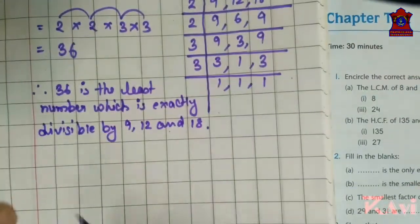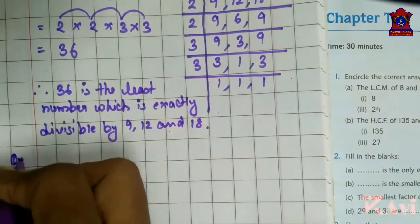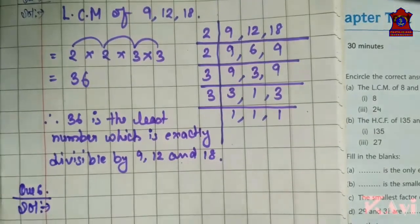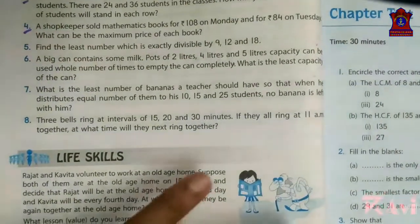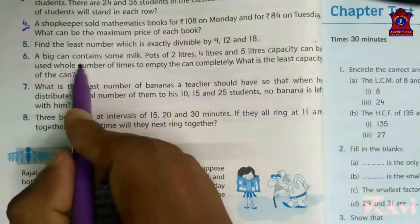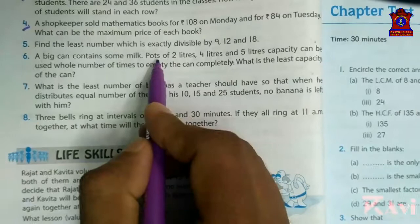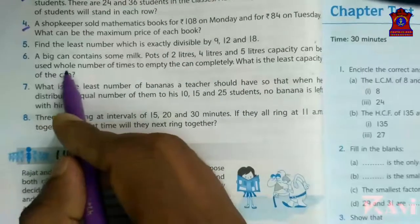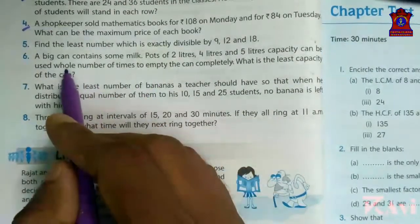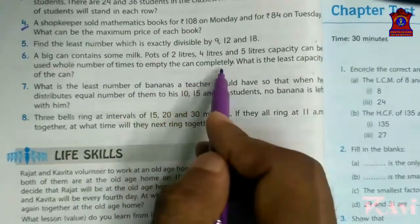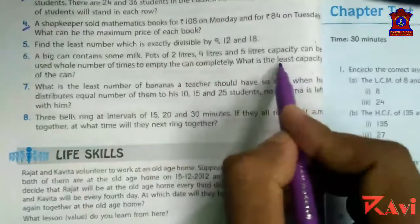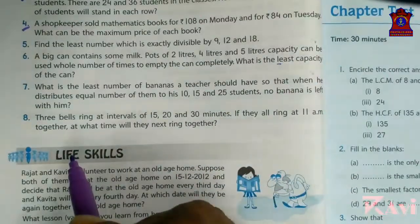Now, next question. Question number 6. What is there in question number 6? Let's read it. A big can contains some milk. Pots of 2 liter, 4 liters and 5 liters capacity can be used whole number of times to empty the can completely. What is the least capacity of the can? Least again? So what you need to do? LCM.